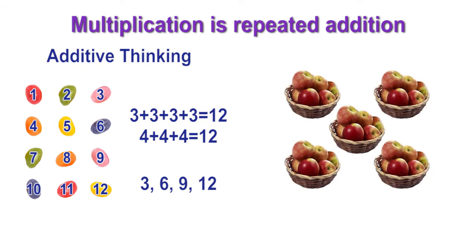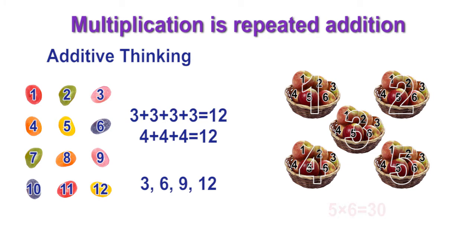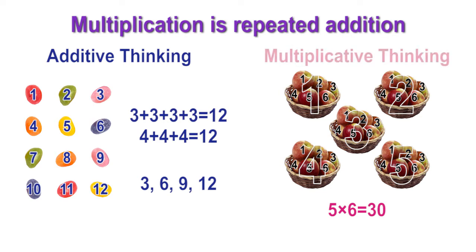When asked to determine the amount of apples in the basket, most students in 6th grade would multiply 5 groups of 6, or 5 times 6, for a product of 30. This is what we call multiplicative thinking.